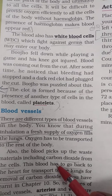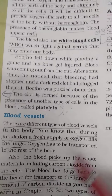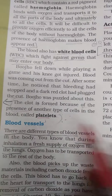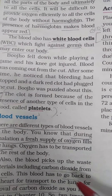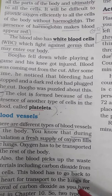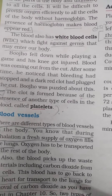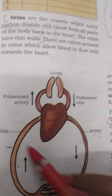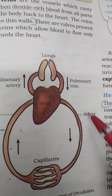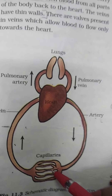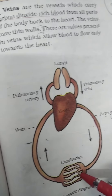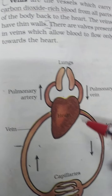Next is blood vessels. There are three types of major blood vessels: veins, arteries, and capillaries.